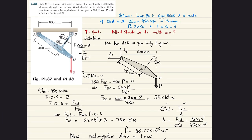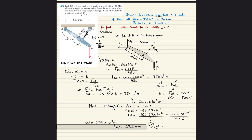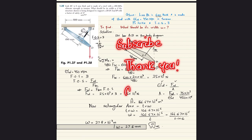This rectangular cross-section has a factor of safety of three. That was all about problem 1.38. I hope you enjoyed this video — kindly subscribe to my channel and keep watching. If you have any questions, you can ask me in the comment section. Thank you for watching.